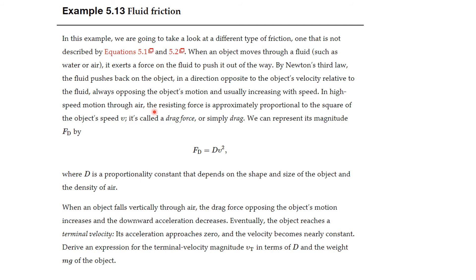Sometimes we also have resistance forces that occur when an object moves through a fluid — this is a contact force because you must push the fluid out of the way. The fluid could be oil, water, or even air. For high-speed motion through air, the resisting force is often proportional to the square of the velocity. It's called a drag force, and its magnitude is F sub d = D times v squared, where the drag coefficient D depends on the shape, size, and density of the medium — in this case, air.